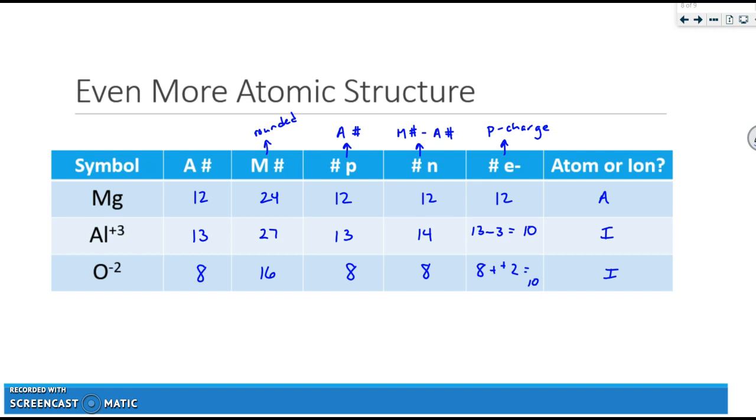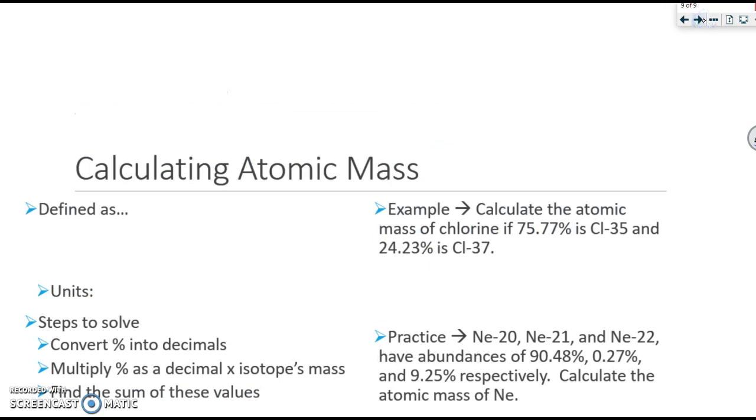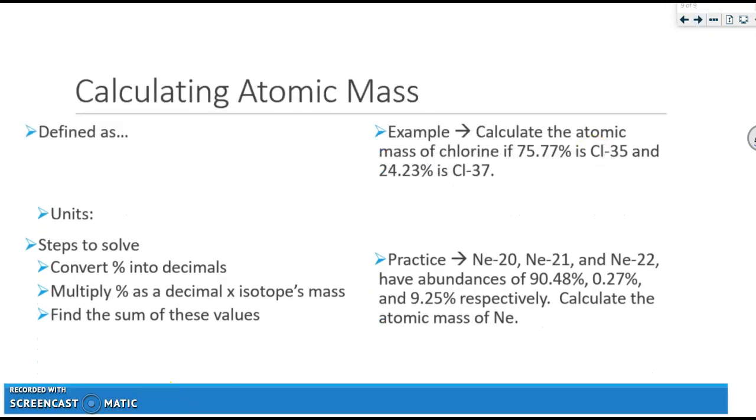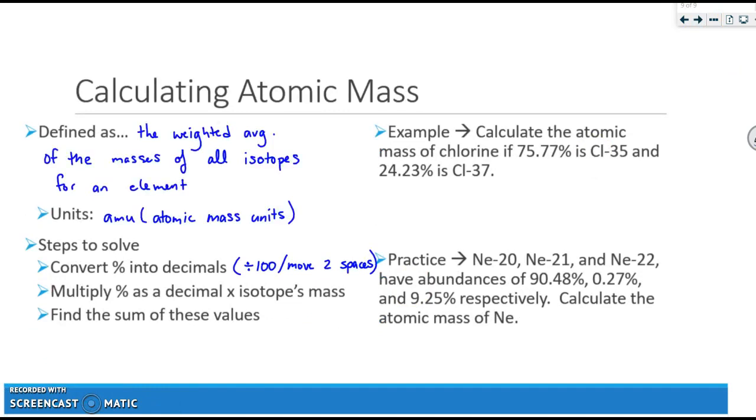The last part of atomic structure is calculating atomic mass. Atomic mass is defined as the weighted average of the masses of all isotopes for an element. Its unit is the AMU. To solve the problems, you can see the steps there. We convert to decimals, multiply them by the masses, and then we find the sum. So we'll do the example problem. I'm going to move my decimal two spaces for each of these. So I have .7577 times the mass of 35, and I have .2423 times the mass of 37. I'm going to solve both of those, add them together, and get 35.4846 AMU. Do not round for these.